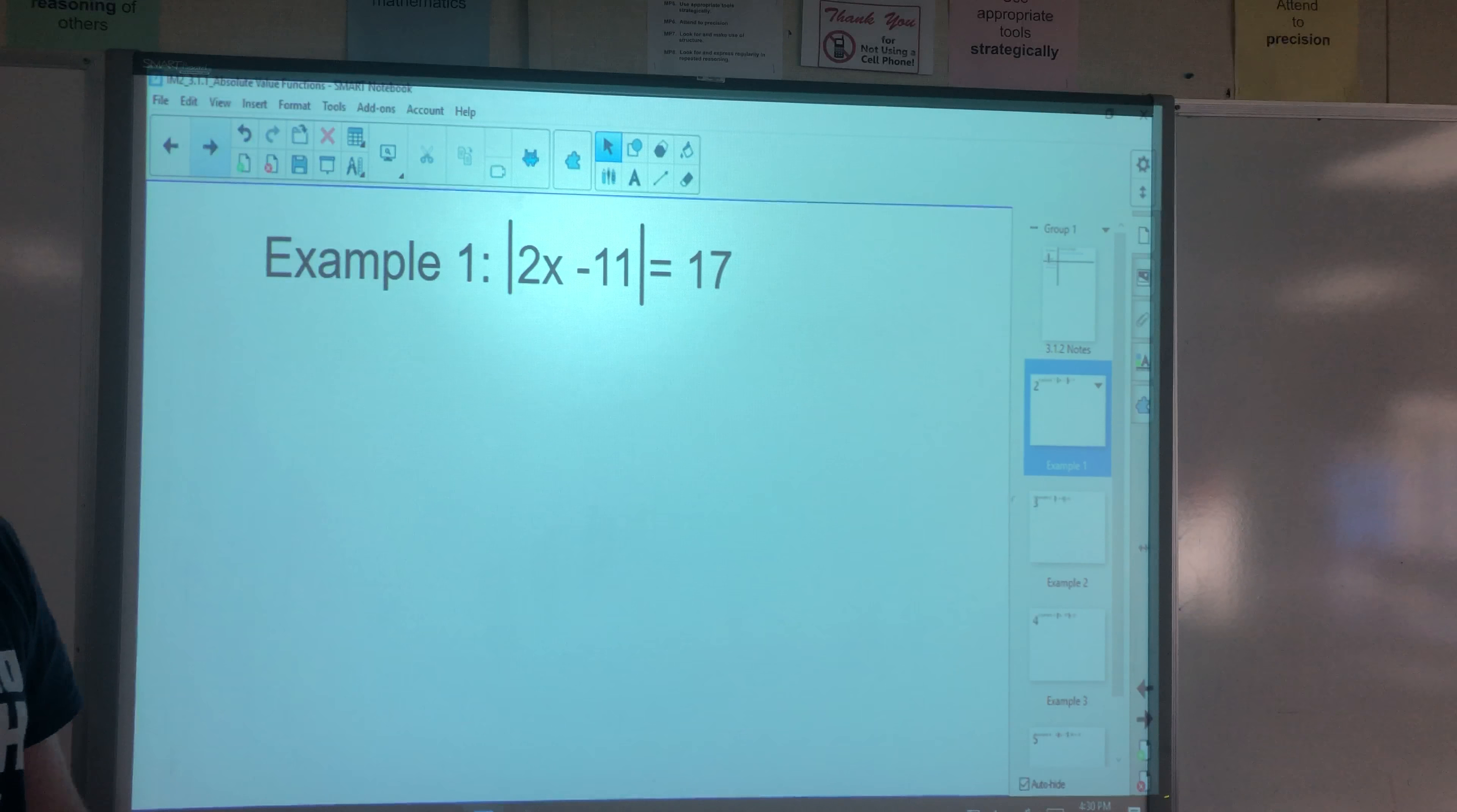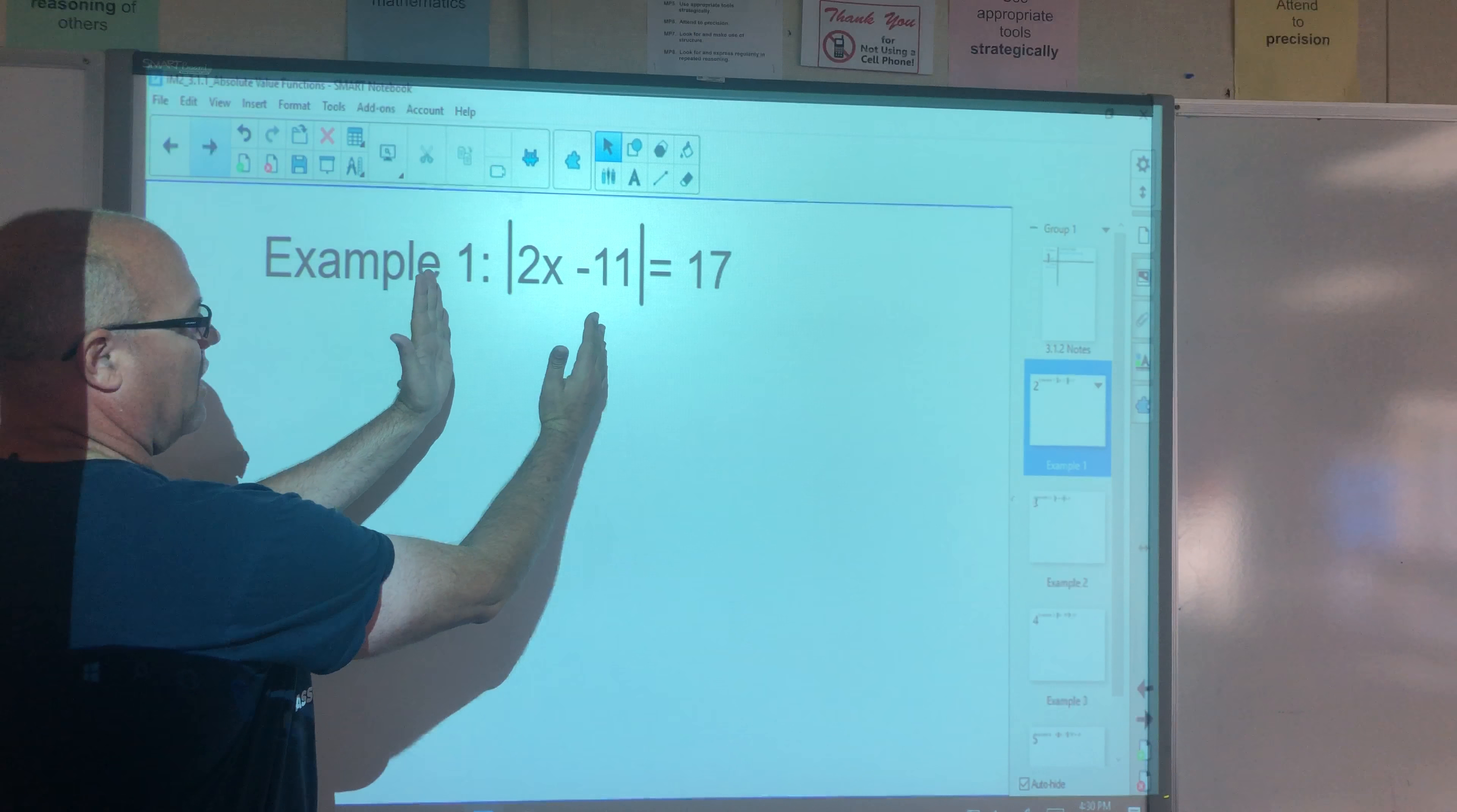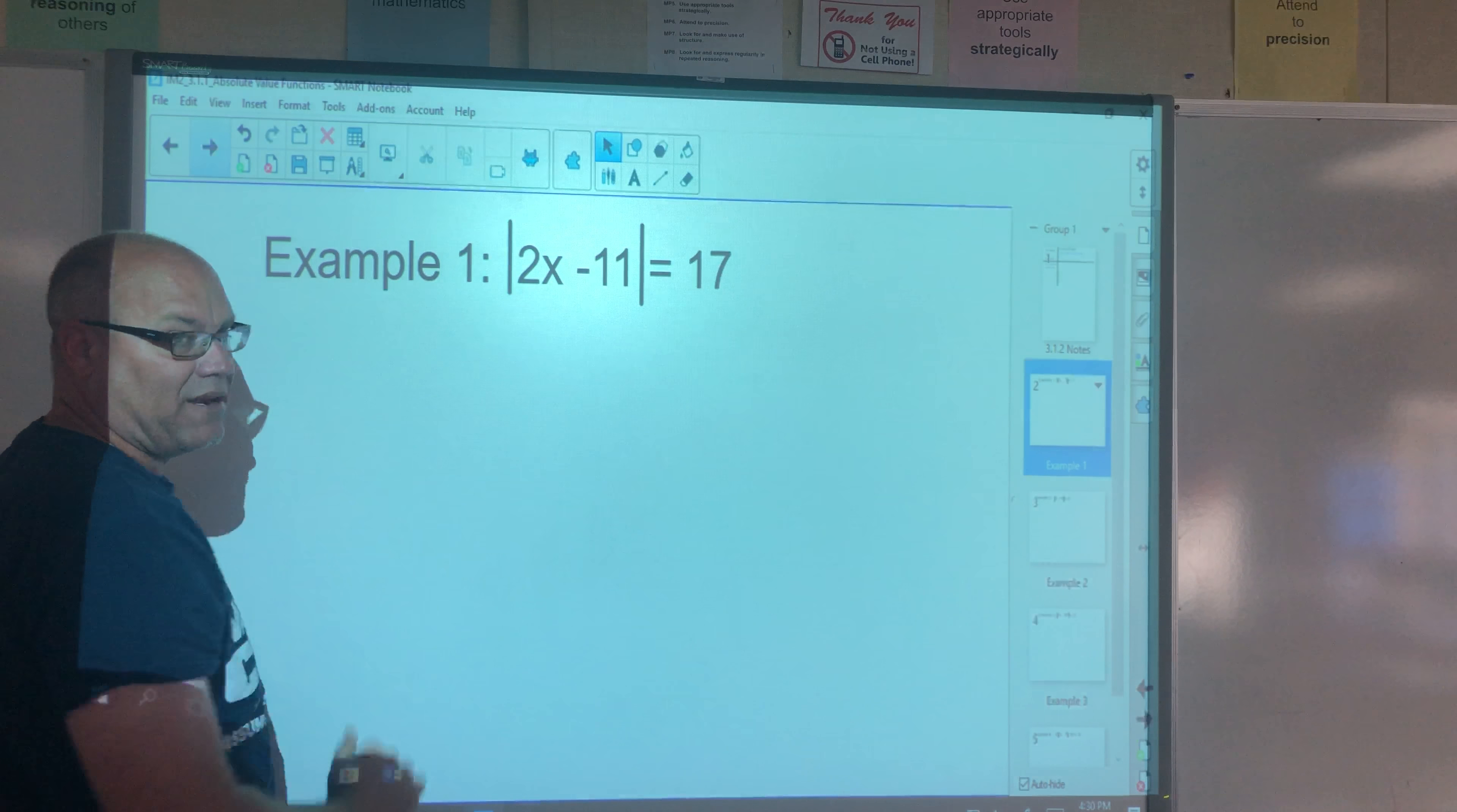Our first example is we have the absolute value of 2x minus 11 equals 17. And we have the absolute value bars are isolated by themselves equal to this quantity. So what we know about absolute value is that the inside, the value inside the absolute value bars could be positive 17 or it could be negative 17.